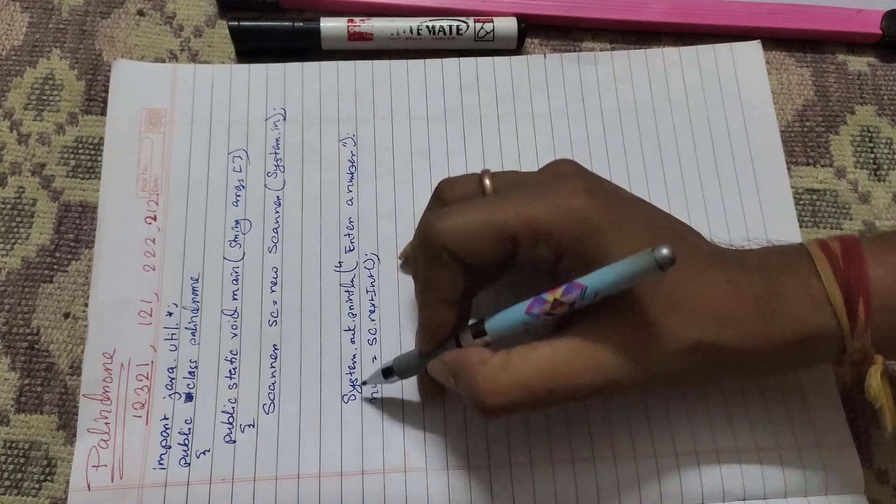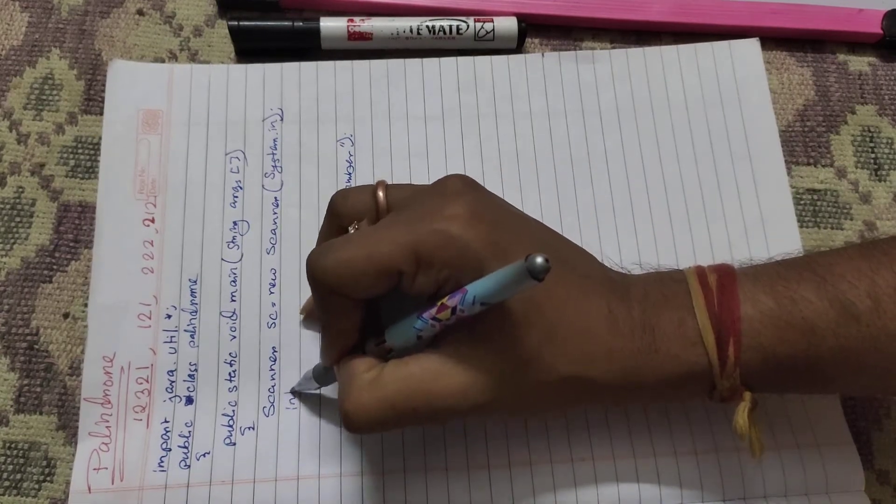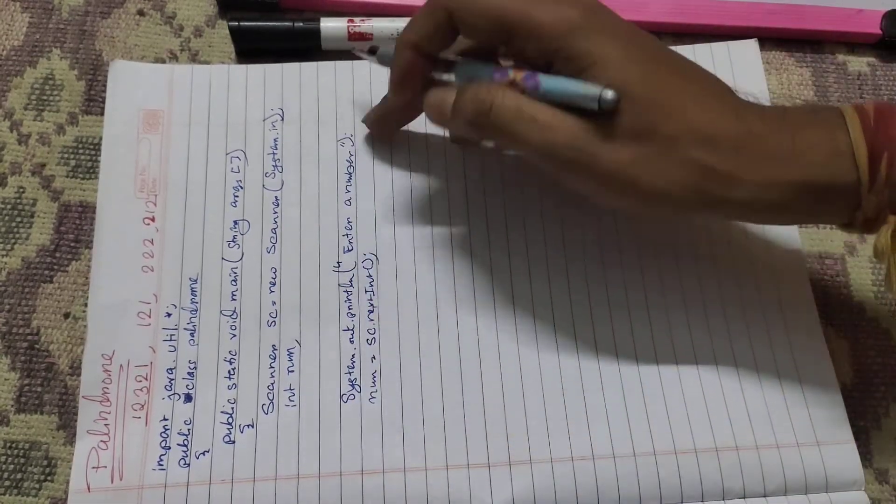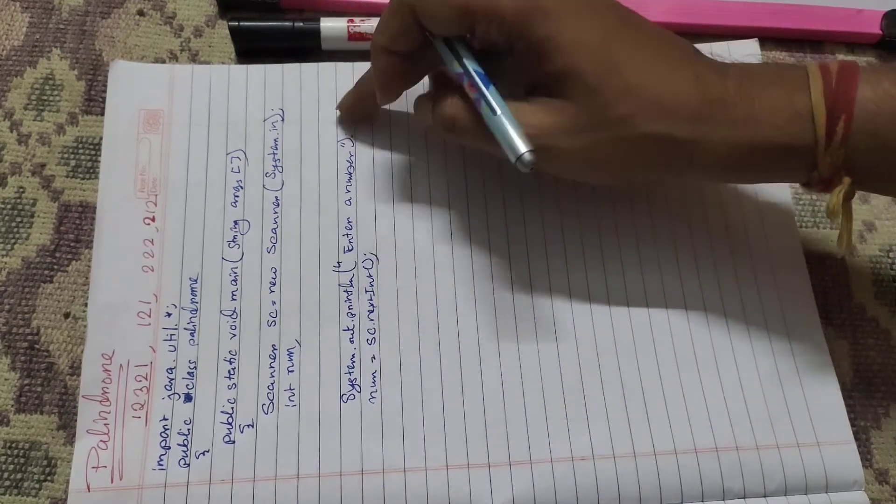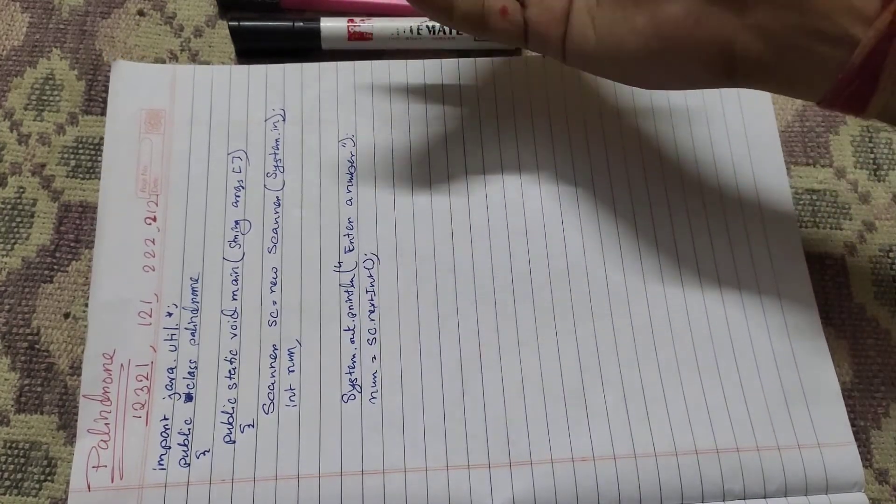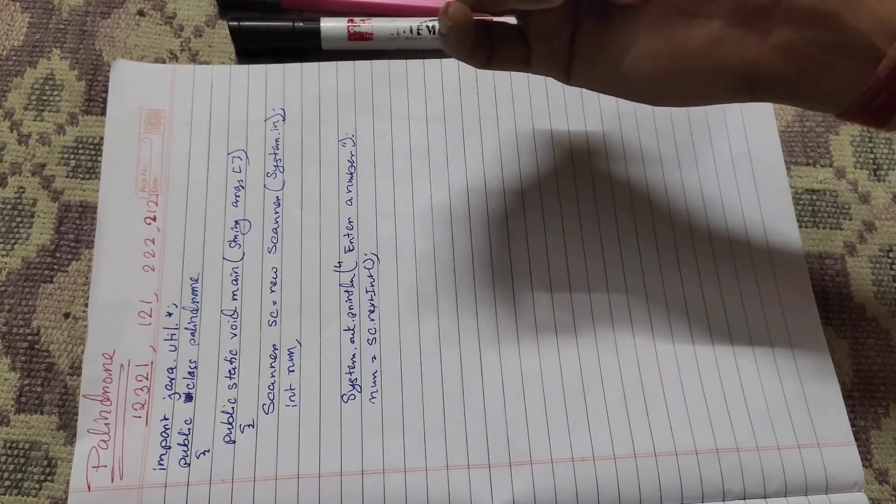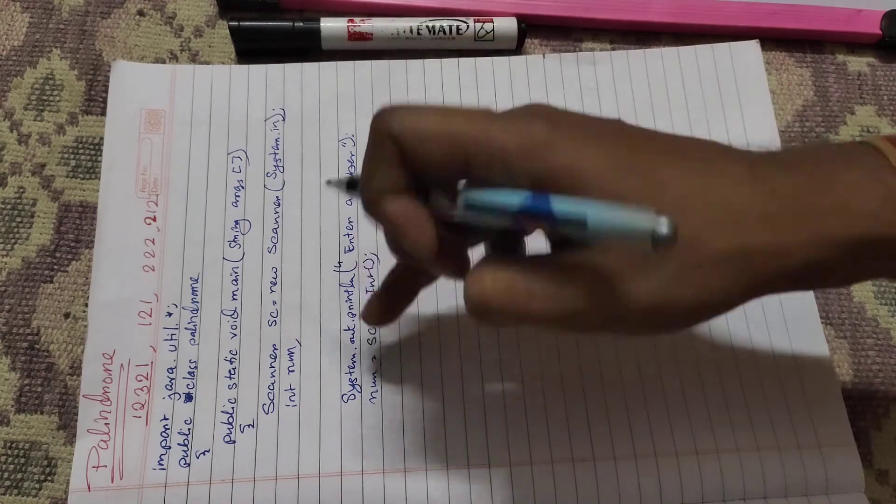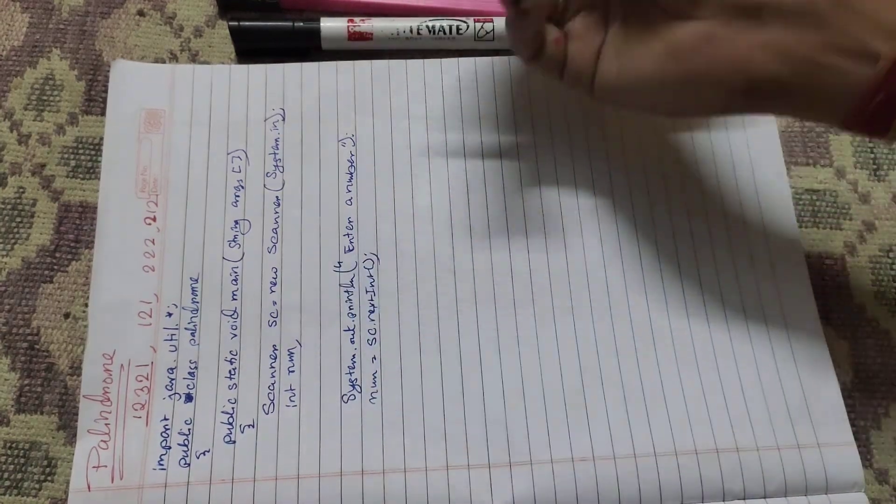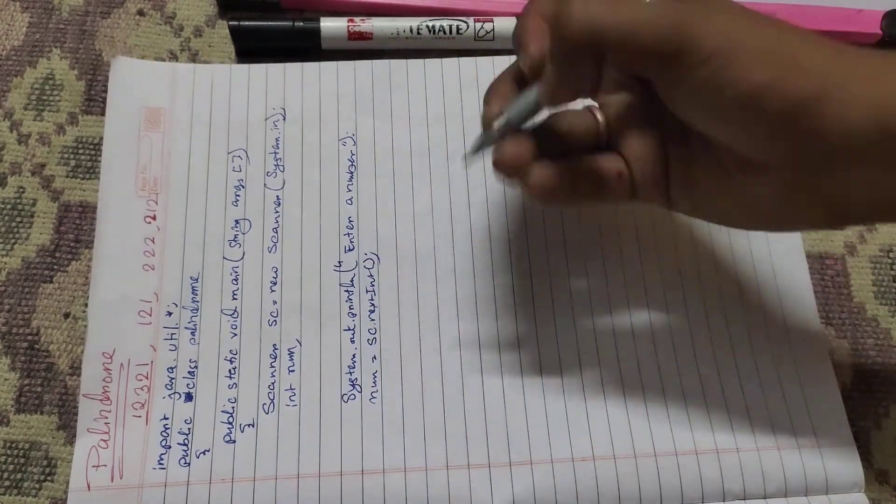Now declare int num. System.in "Enter a number". Number is written - that part is to introduce to the user that they have to enter a number which will be stored into variable num. Now we have to reverse the number.